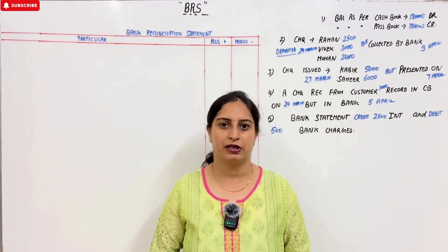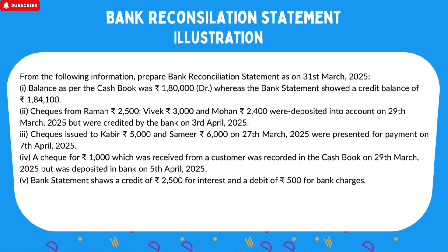I will read the question on the screen. From the following information, prepare Bank Reconciliation Statement as on 31st March 2025. Balance as per cash book is $1,80,000 — a debit balance. Balance as per bank statement (pass book) is $1,84,100 — a credit balance. Checks from Raman $2,500, Vivek $3,000, Mohan $2,400.